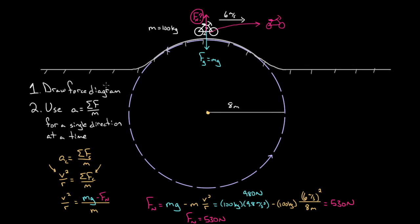To recap: when solving centripetal force problems, draw a quality force diagram, then use Newton's second law for one direction at a time. If you use the centripetal direction — the direction pointed radially into the circle — the acceleration in that direction is v² over r. Be sure to only plug in forces that are directed radially: forces pointing into the circle are positive, and forces pointing out of the circle are negative.